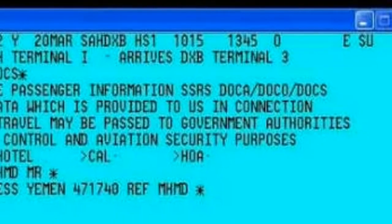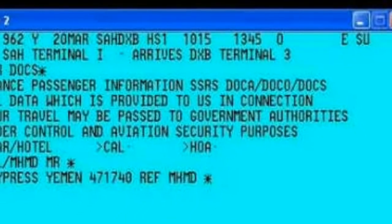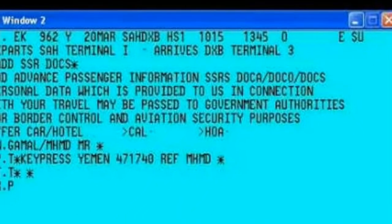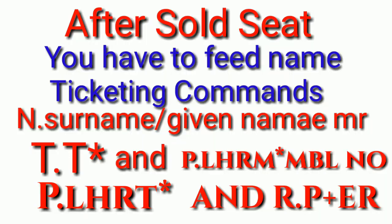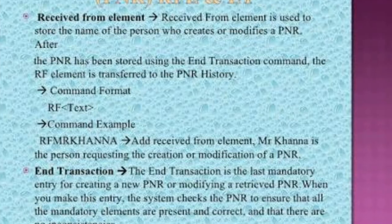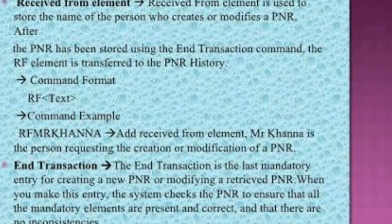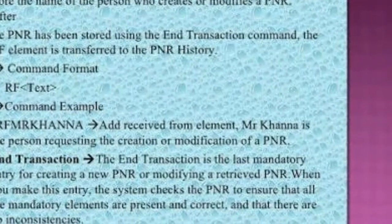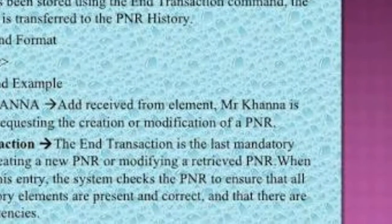After selling the seat, you have to enter the name and other details using the following entry. After that, you have to give the ticketing entries and fit the passenger name using the following entries, then end the transaction with ER then IR. This is for reference — just read the information.